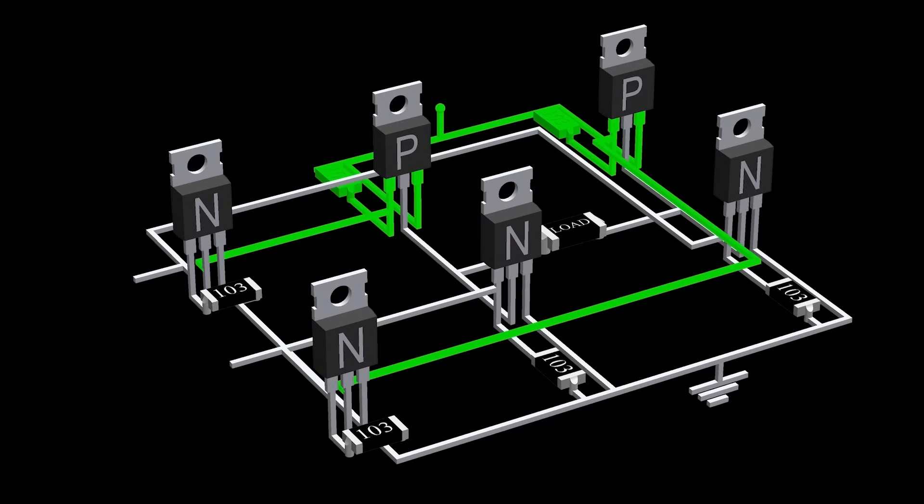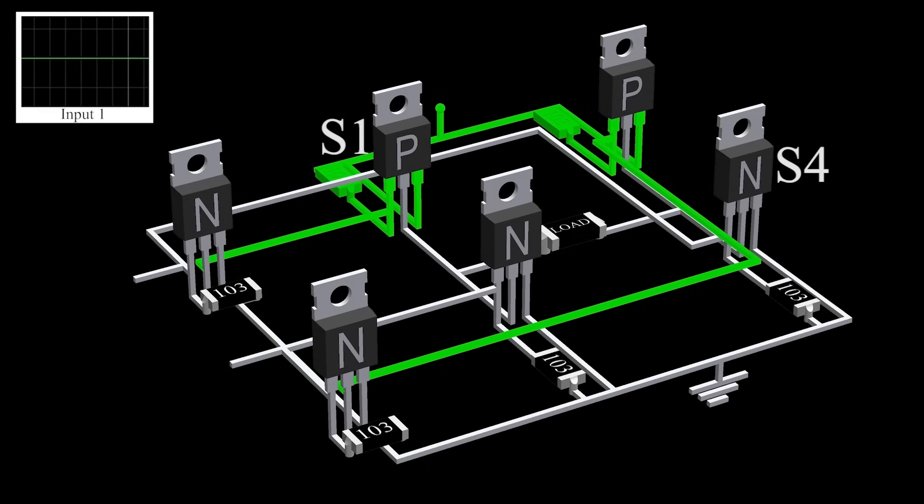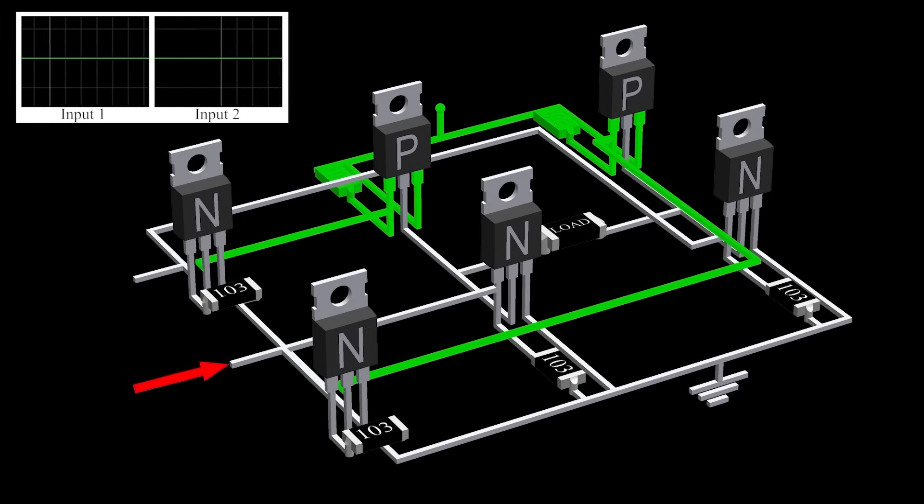Now, to get the positive half of the cycle, we need the PWM at this input. This will control the switches S1 and S4. Also, the switches S3 and S2 are to be turned off. And for the negative half of the cycle, we feed the PWM in this input.